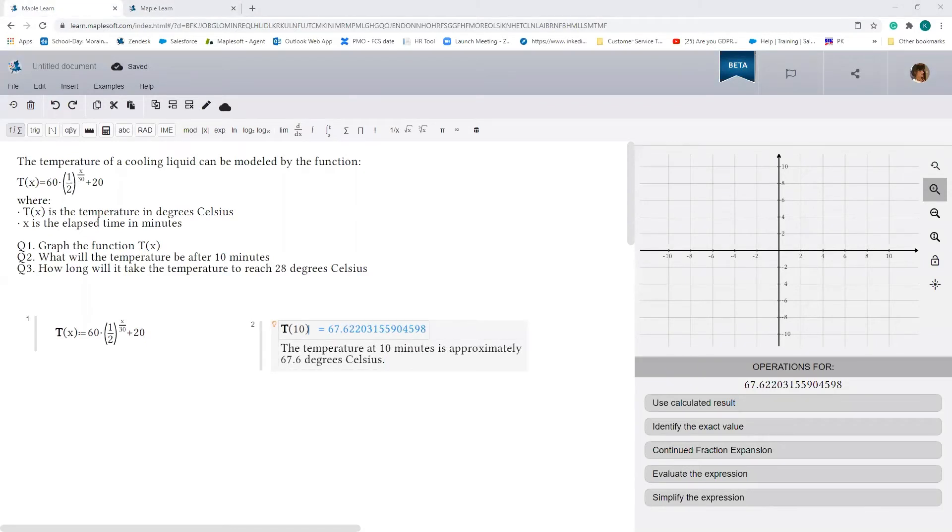Question 3 is slightly more involved. To solve this problem, we need to work backwards from the temperature given in the question, so 28 degrees Celsius. Step one is to substitute the final temperature into the equation for t of x. So let's do that.